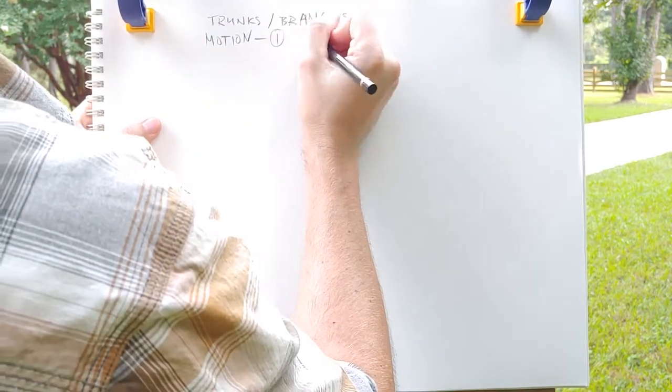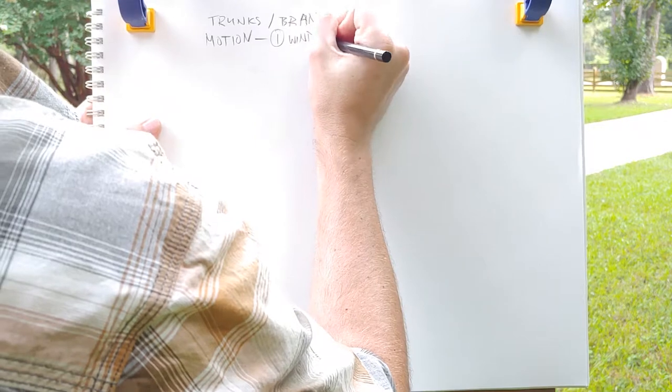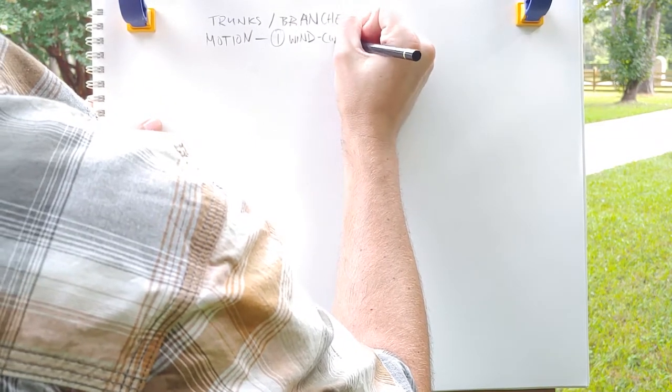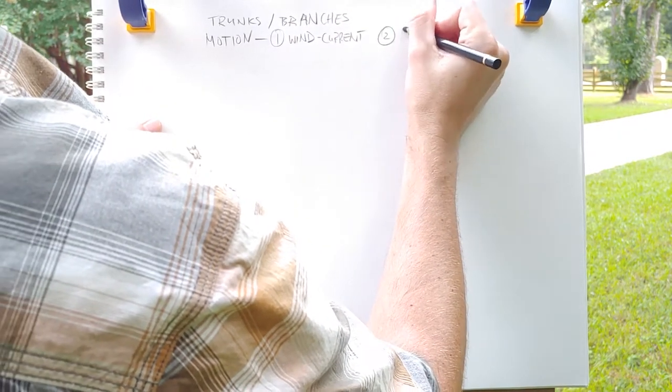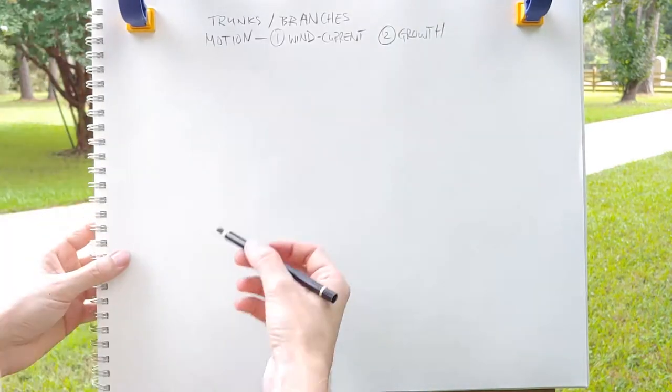Oftentimes people have a lot of trouble drawing tree trunks and branches. They can get a little flat and idealized. What you're looking for is motion, primarily.